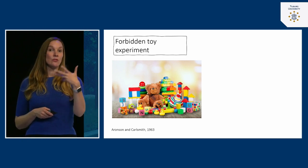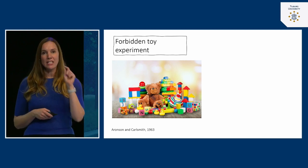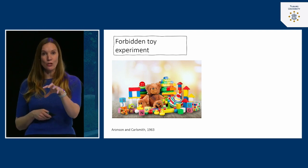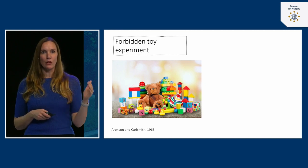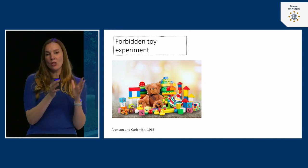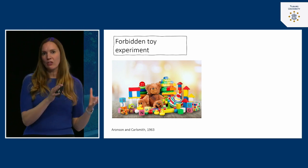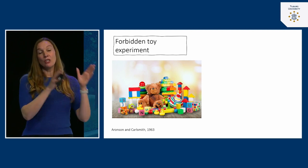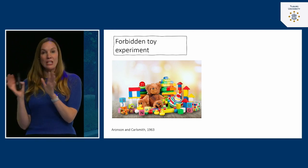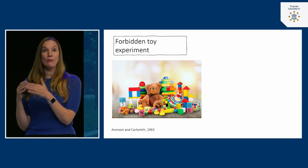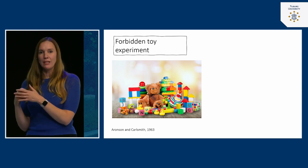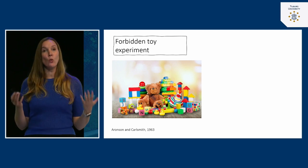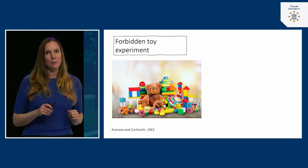The researchers then told the children they could play with any toy they liked, except for one — which happened to be the most attractive toy. That became the forbidden toy. Half the children were told that if they played with the forbidden toy there would be severe punishment, while the other half were told there would be only mild punishment. All the children behaved well — no one played with the attractive toy — but that was only the first part of the experiment.